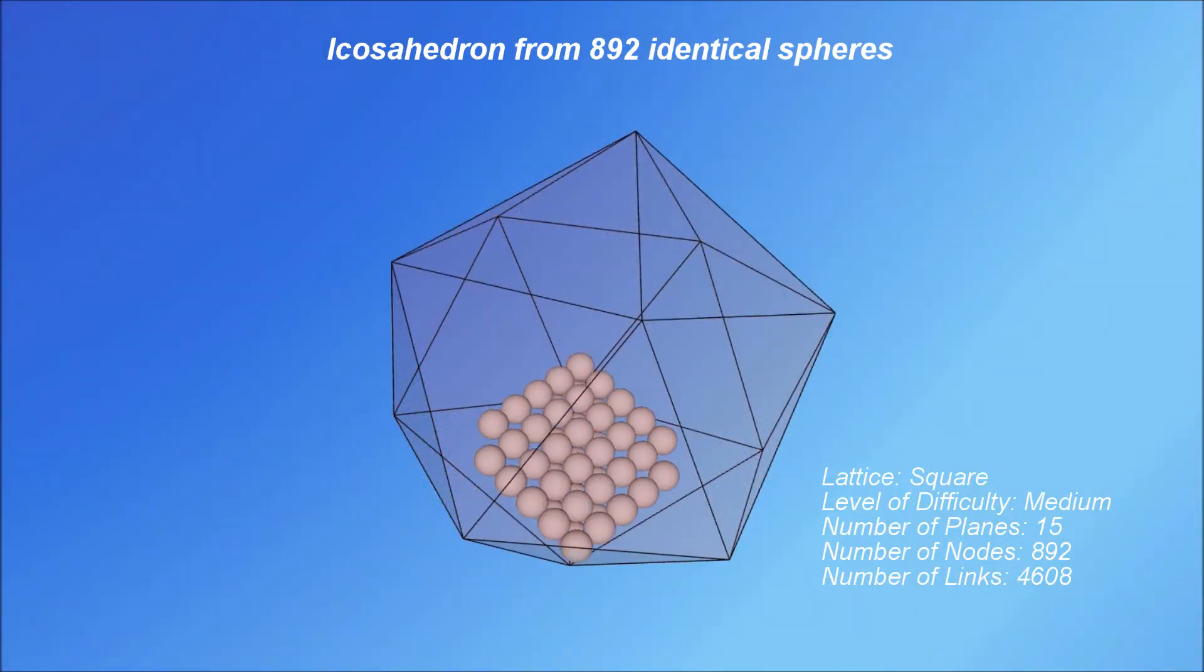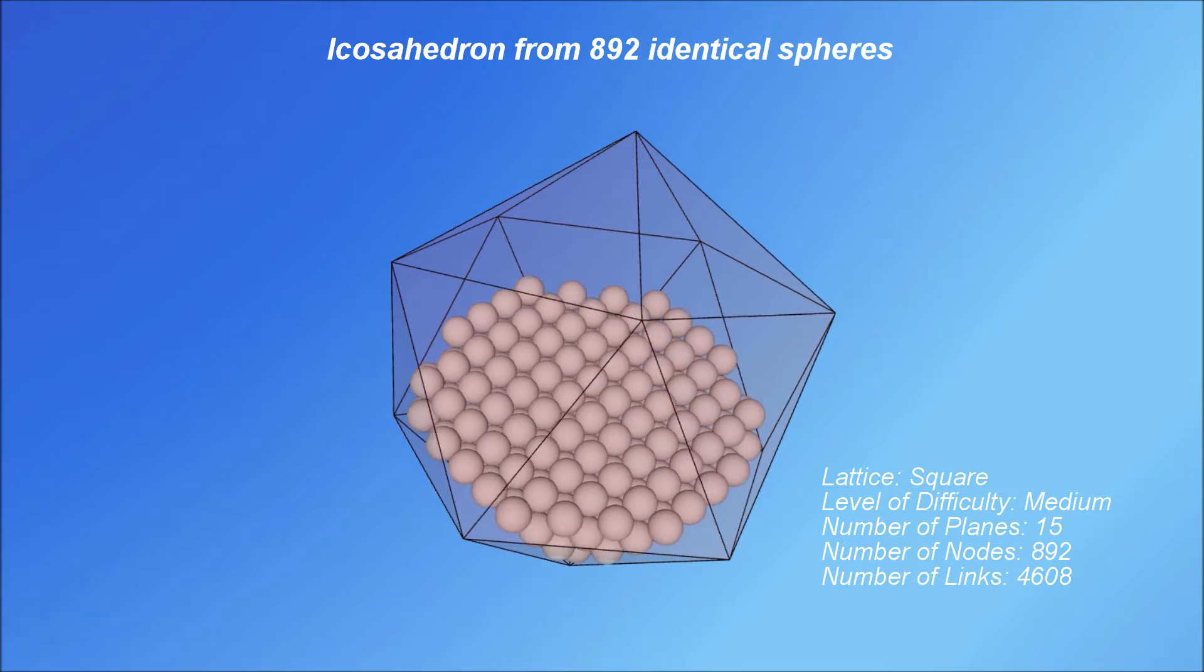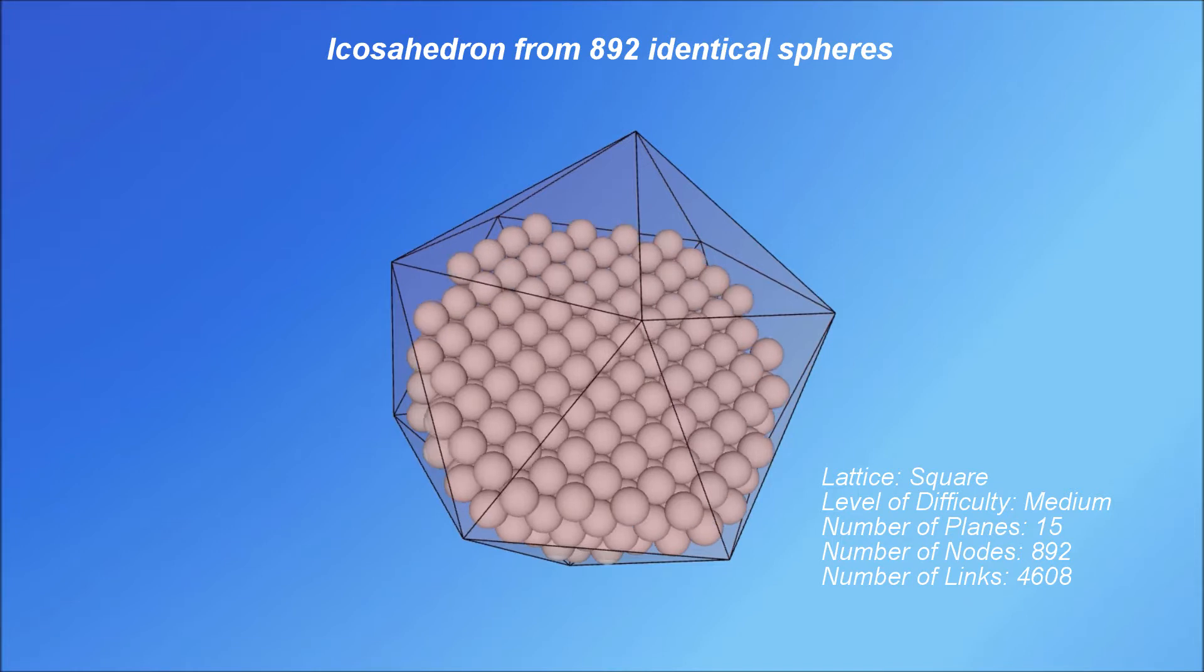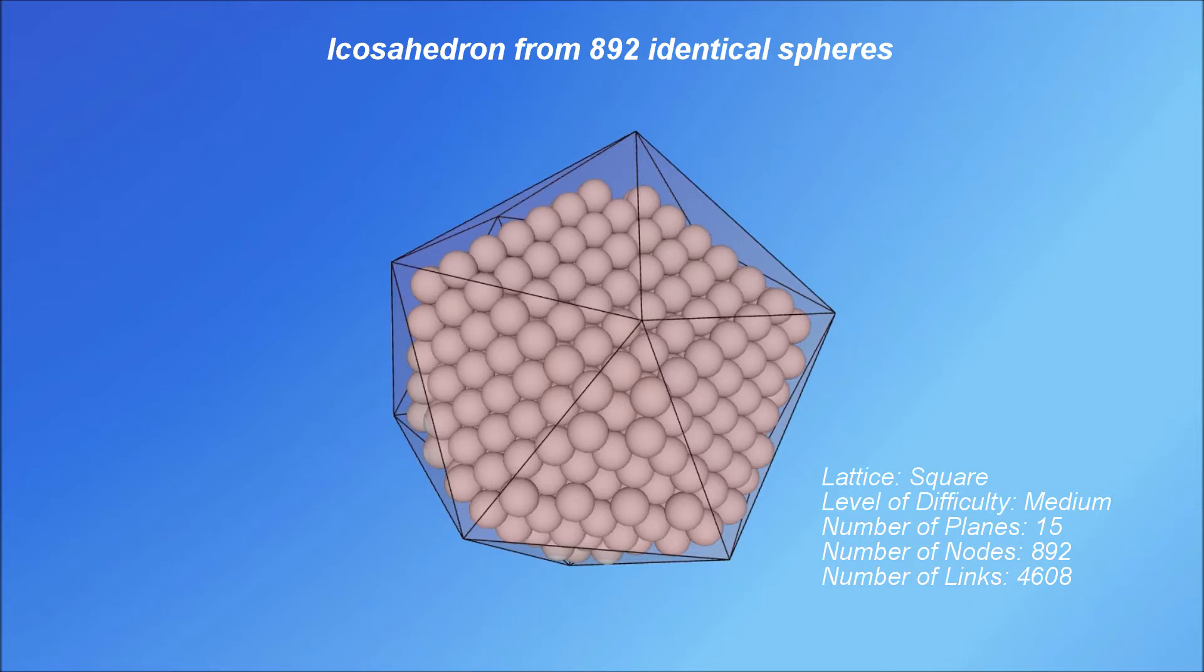As we have seen in the previous videos, the tetrahedron, octahedron, and cube can be easily assembled in CPS. The larger the number of spheres one uses, the more precise platonic solid one gets.